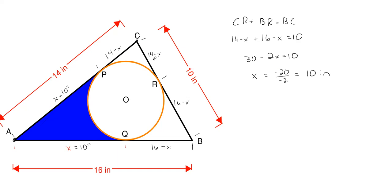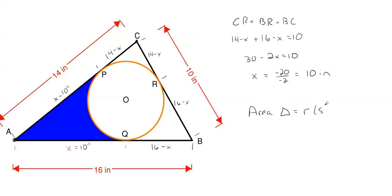I'm going to focus on this area where the blue region is. Whenever you have a circle inscribed inside a triangle, there is a relationship between the triangle and the circle regarding their areas and the radius. The formula is: the area of the overall triangle equals the radius of the inscribed circle multiplied by S, where S is half the perimeter. If we can get the area of the triangle and half the perimeter, we can solve for the radius.